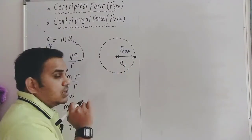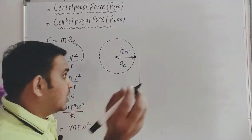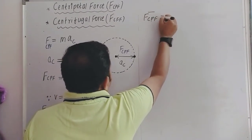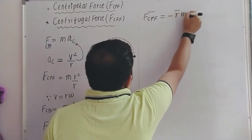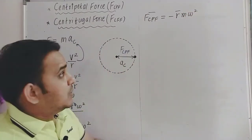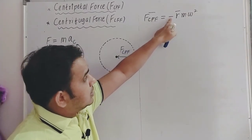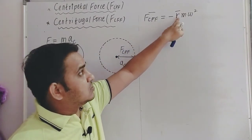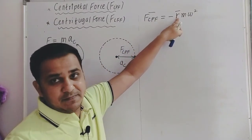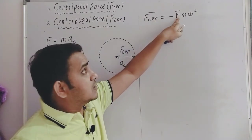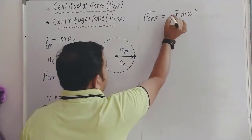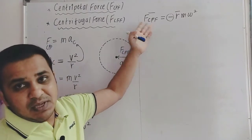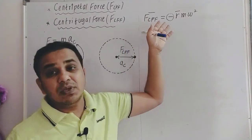Now if we write this in vector form — since force is a vector quantity — centripetal force in vector form is written as minus r̄·m·ω². The negative sign indicates that the force is directed opposite to the radius vector, i.e., towards the center. This is the vector form of centripetal force.